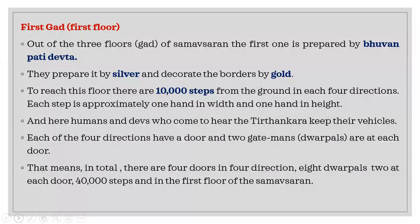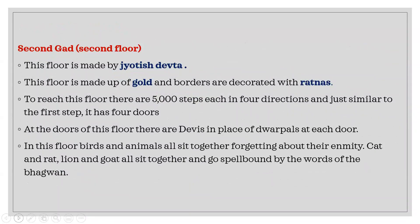The middle Gharad is constructed by Jyotis Devtas. It is made of gold and decorated with Ratnas. There are 5,000 steps in all four directions to reach this Gharad, and Devis — such as Jaya Devi, Vijaya Devi, and Aparajita — act as Dvarpals. Here all the animals sit and listen to Bhagwan's deshana without any fear or enmity — this is one of the Atishais of the Bhagwan.